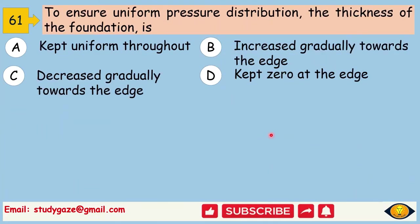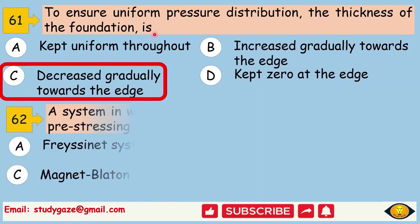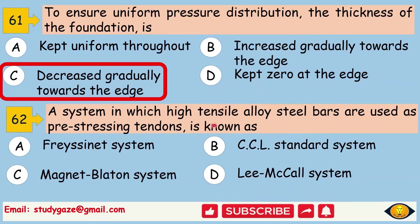To ensure uniform pressure distribution, the thickness of the foundation is. Answer is decreased gradually towards the edge. A system in which high tensile alloy steel bars are used as pre-stressing tendons is known as. Answer is Lee-McCall system.